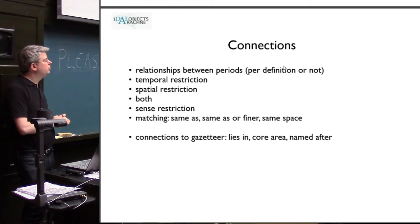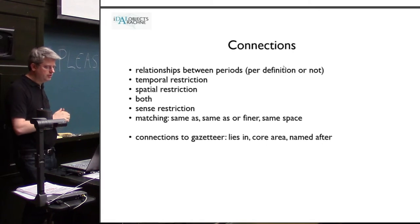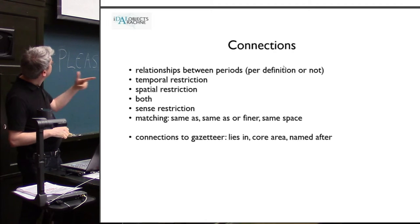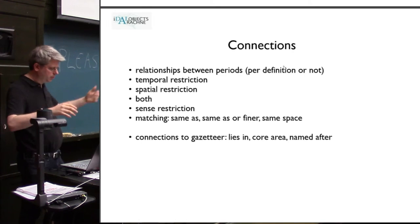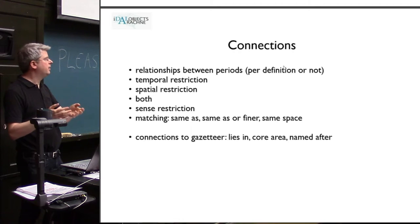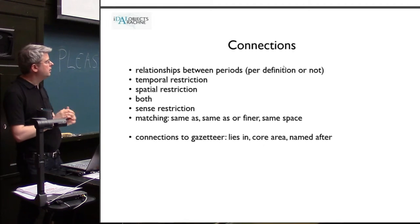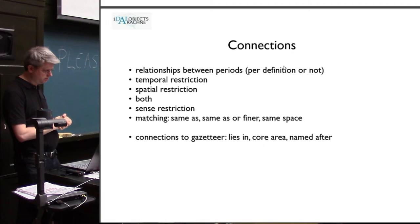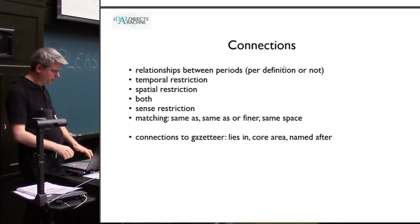Since we already have a gazetteer and it's a more common concept, we also have different properties that link to it. For example, 'lies in' is obvious, but 'core area' is used when something happens basically there but might also happen in the surrounding area. The Neanderthal, for instance, is named after the Neander valley near Düsseldorf, but that might not be the main area where Neanderthal remains occur today.